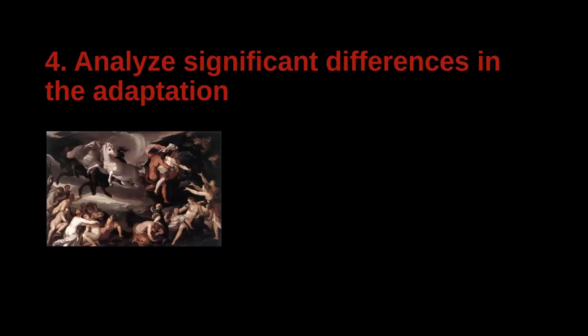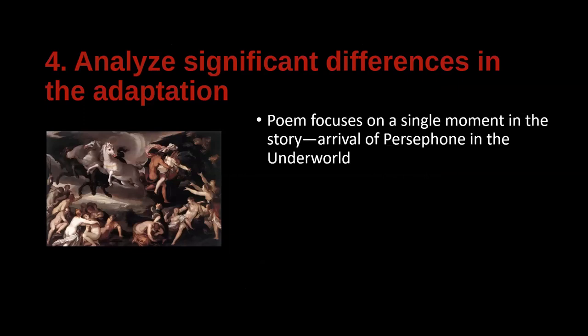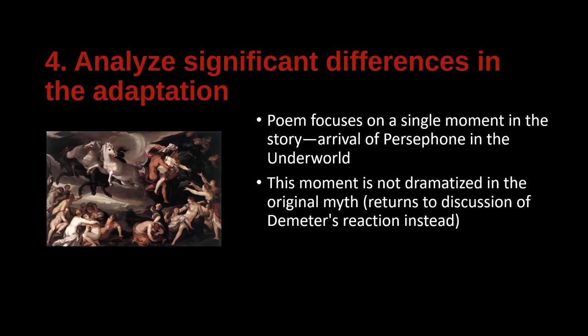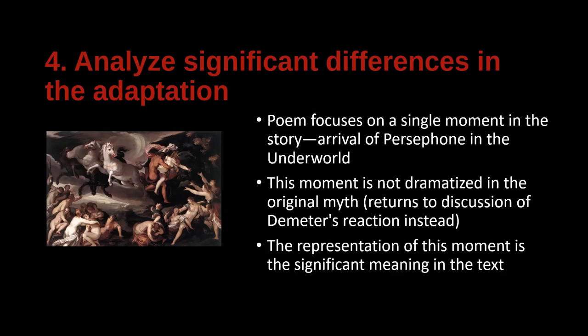Now let's think about the differences. The poem focuses on a single moment in the story. The myth has many different pieces, but the poem focuses only on Persephone's arrival in the underworld — right after she's been forcibly taken from her mother and friends. This particular moment is not dramatized in the original myth. Instead, when Persephone is taken underground, the action shifts to Demeter figuring out what happened and her reaction. We don't actually see this moment explicitly in the original myth, so it's very interesting that this contemporary poet focuses in on a moment that isn't shown in the original.